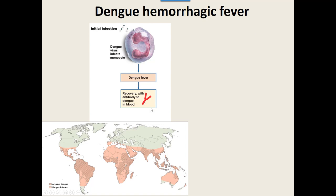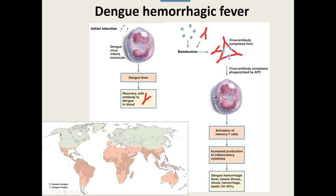However, the second time you pick up this virus, those antibodies recognize the virus as they're supposed to. When the white blood cells eat up those antibody-coated viruses, it activates memory cells. Those activated memory T cells cause inflammatory cytokines to be produced — chemicals that cause inflammation and the movement of white blood cells to infections. But your immune system starts to create too much inflammation, to the point that it can cause hemorrhagic fever: extreme fever including bleeding on the brain, shock, hemorrhaging — and it's deadly in anywhere between 10 and 50% of all cases.